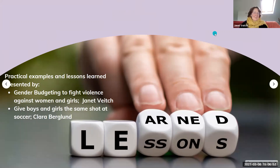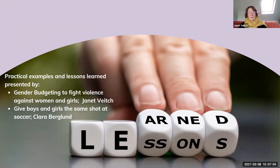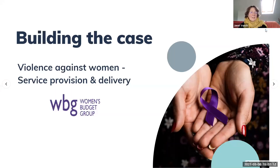Hello. I'm Janet Veach, chair of the UK Women's Budget Group. I'm going to talk about an example of how you can use gender responsive budgeting — specifically how it can be used to make the economic case for women's equality. The example I'm going to use is violence against women and girls, and how we can provide and deliver services by building an economic case for government investing in proper services.